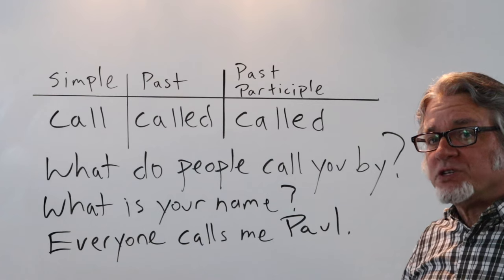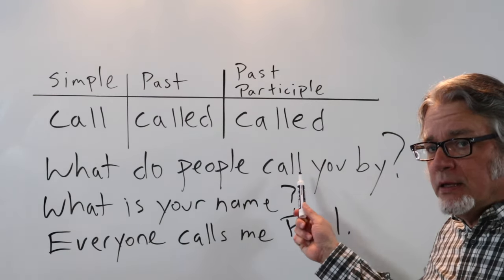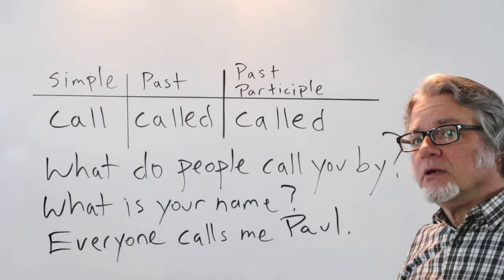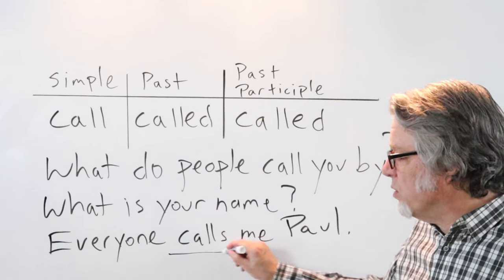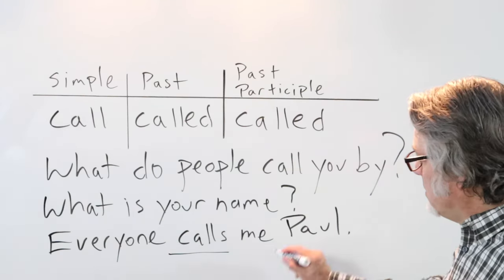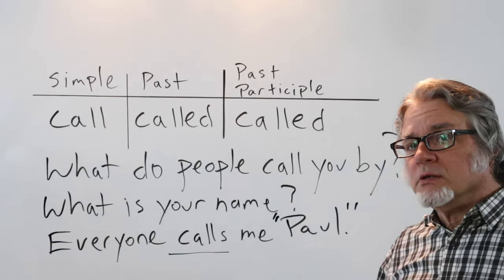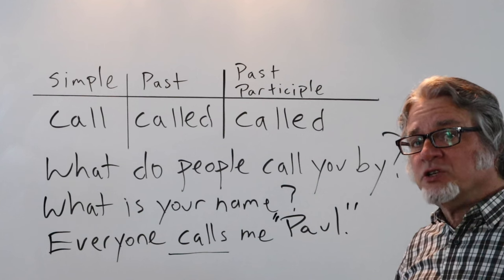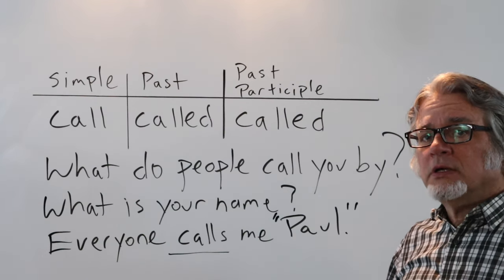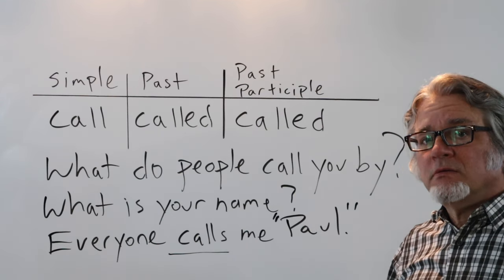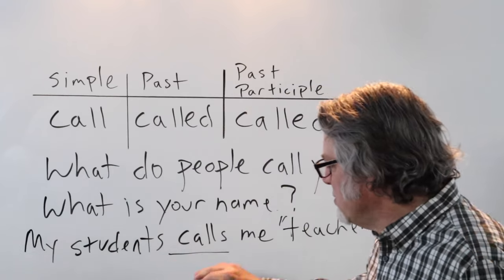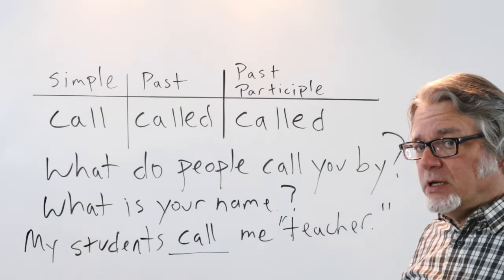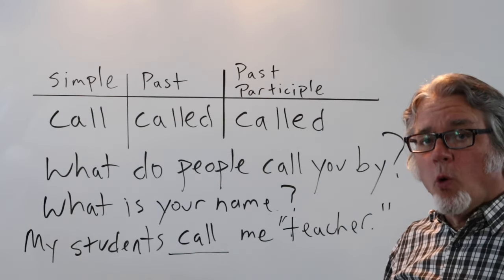It is possible to ask this kind of question for a person: 'What do people call you by?' — but this is a little awkward. Instead, you could say 'What is your name?' and the answer would include the word 'call': 'Everyone calls me Paul.' That's my name. Sometimes students aren't sure if they should call me 'teacher' or 'Paul' — everyone just calls me Paul. My students call me 'teacher,' which is okay — you can call me 'teacher,' 'Paul,' or 'Teacher Paul.'